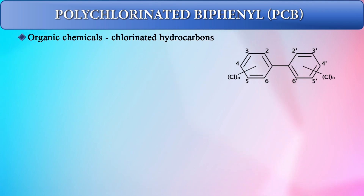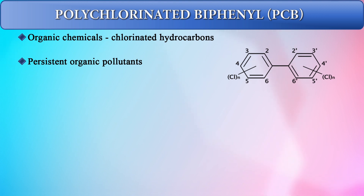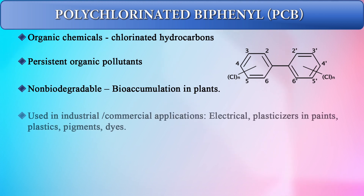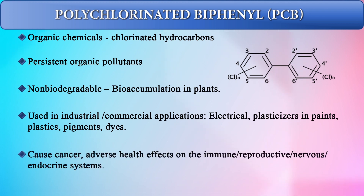Polychlorinated biphenyls (PCBs) are organic chemicals — polychlorinated hydrocarbons classified as persistent organic pollutants, meaning they remain in the environment for a long period of time. They are non-biodegradable and can be bioaccumulated in plants for several years. PCBs are used in industrial and commercial applications including electrical equipment, plasticizers, paints, plastics, pigments, and dyes. They can cause cancer and adverse health effects on the immune, reproductive, nervous, and endocrine systems.